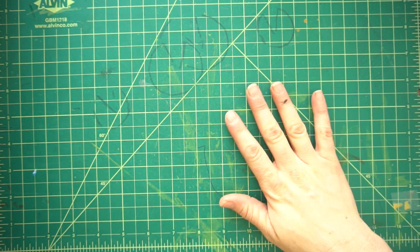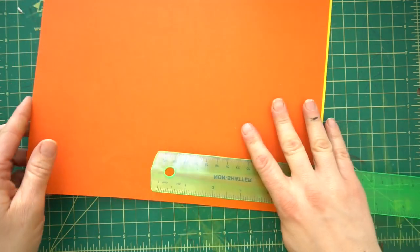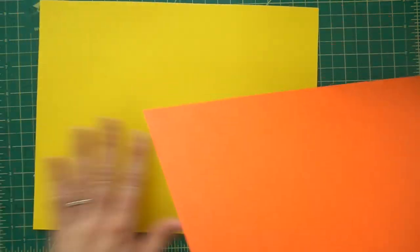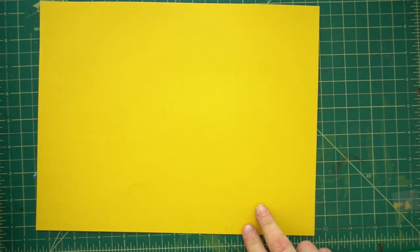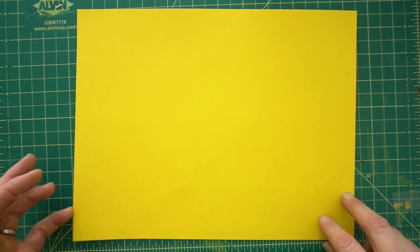So these are the supplies that you need. You need paper to make it out of. I'm just going to make it out of this yellow paper just so you can see my lines a little bit better when I'm drawing them.